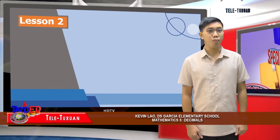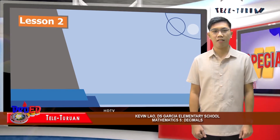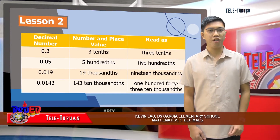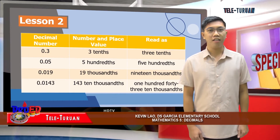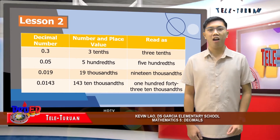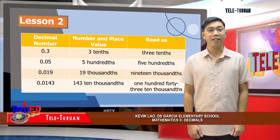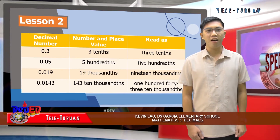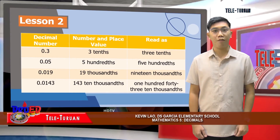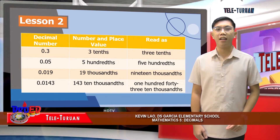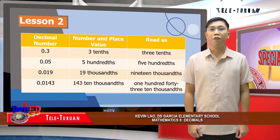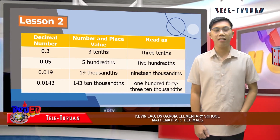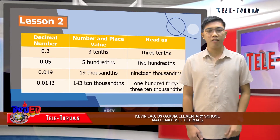Now let's proceed to reading and writing decimals. Like whole numbers, we read decimals from left to right. The digits to the left of the decimal point are read as a whole number, and the decimal point is read as 'and.' The digits to the right of the point are also read as a whole number, after which we say the name of the place value of the last digit. For example: three tenths, five hundredths, nineteen thousandths, and one hundred forty-three ten-thousandths.